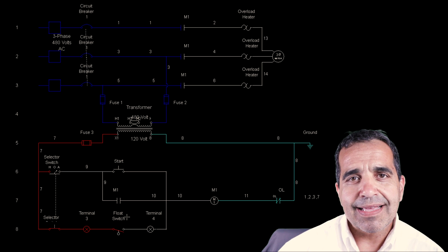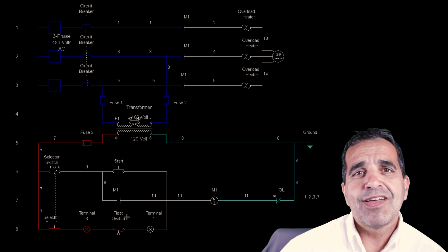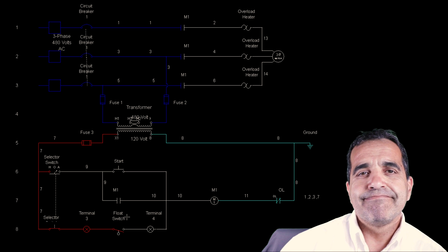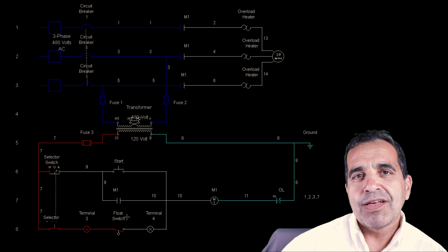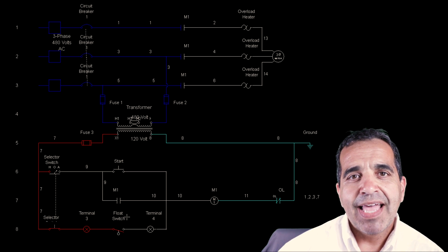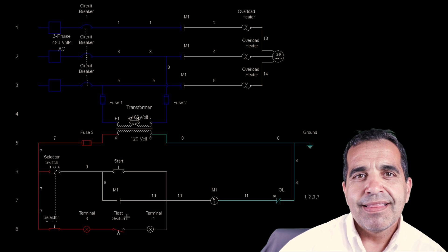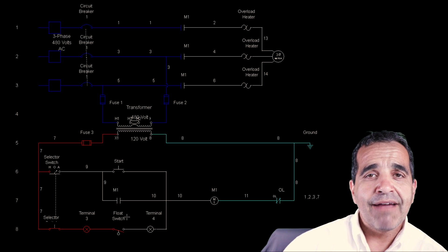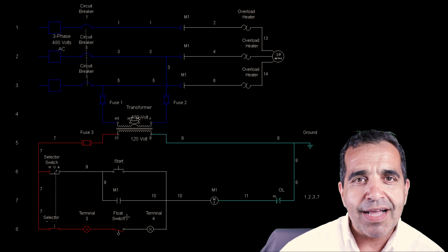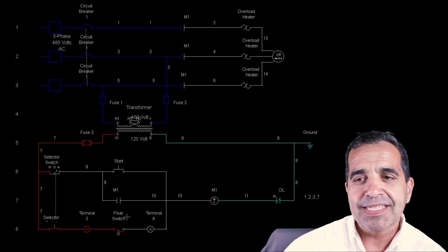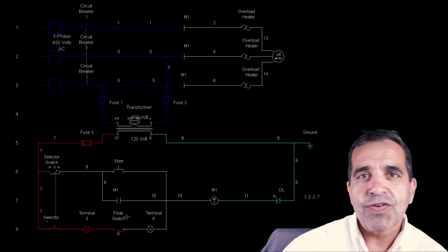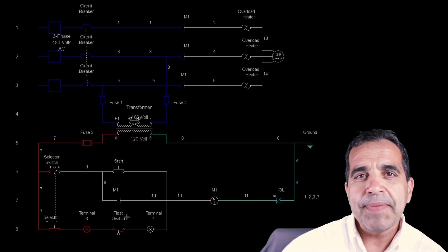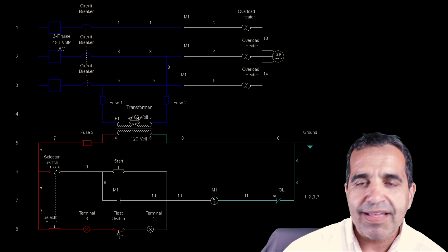So it may be, it could be anything. It could be a float switch. It could be a level transmitter. It could be any kind of switch that you would want. It could be a timer. So say every night at eight o'clock this comes on for an hour. It could be a timer that closes for an hour and then opens. It could be anything. In this particular case I have it as a float switch.